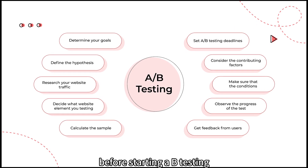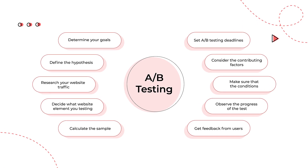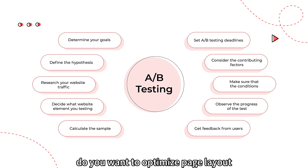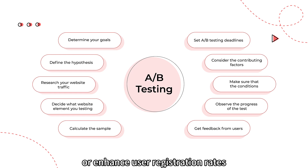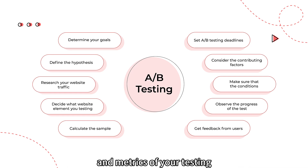Define Testing Objectives. Before starting A-B Testing, clarify your testing objectives. Do you want to optimize page layout, increase click-through rates, or enhance user registration rates? Clear objectives will help determine the scope and metrics of your testing.